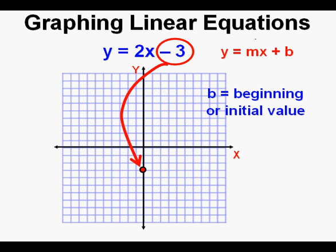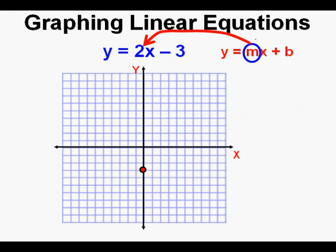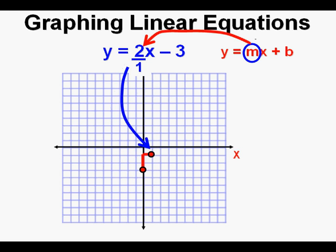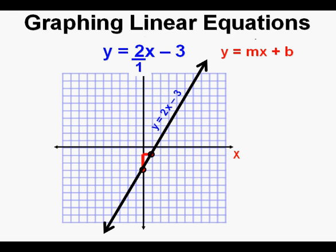For y equals 2x minus 3, we take negative 3 and mark the y-intercept along the y-axis. Then we look at the slope m, which is 2. To use a slope of 2, we make a fraction: 2 over 1. Starting at the y-intercept, we move up 2 — the rise — and to the right 1 — the run. We mark the second point at the end of that run, then draw the line. This is the graph of y equals 2x minus 3.